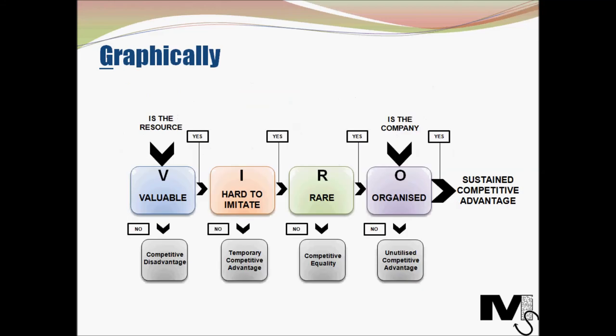Let's summarize the framework graphically. The four aspects are: Valuable, Hard to Imitate, Rare, and Organized — VIRO. We start by understanding if the resource is valuable. If yes, we move to the next factor. If no, we face a competitive disadvantage. For Hard to Imitate: if satisfied, we move on; if not, there is only a temporary competitive advantage that can be lost as competitors begin imitating the product.